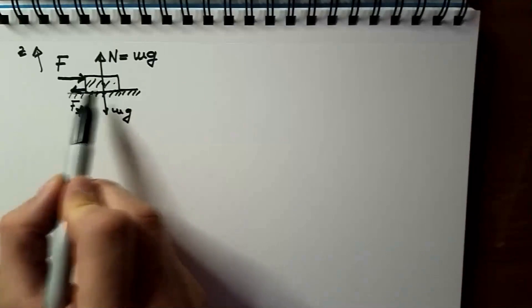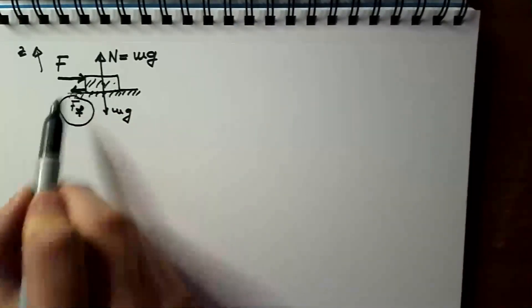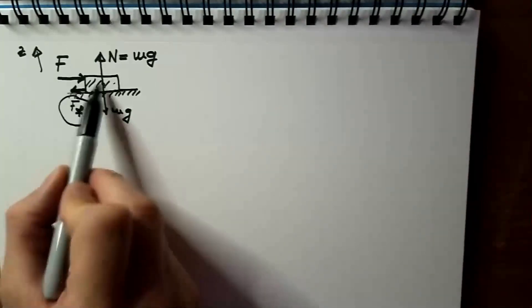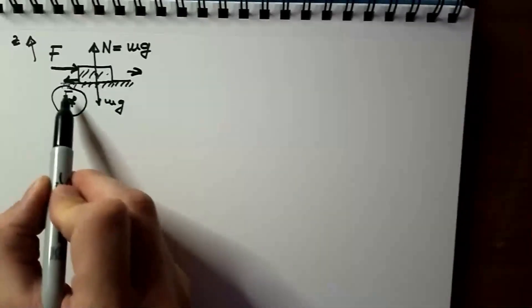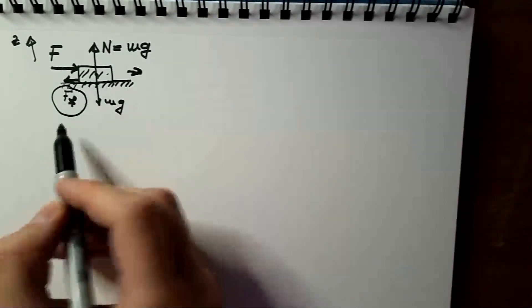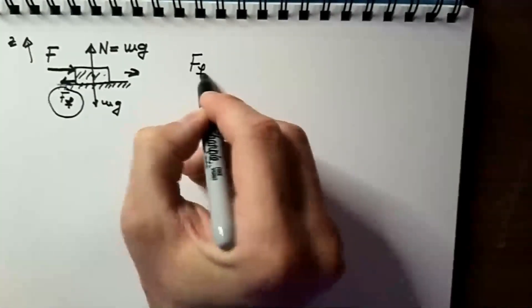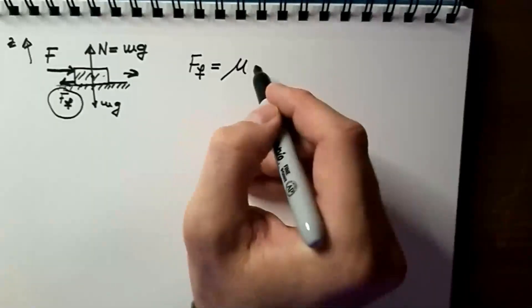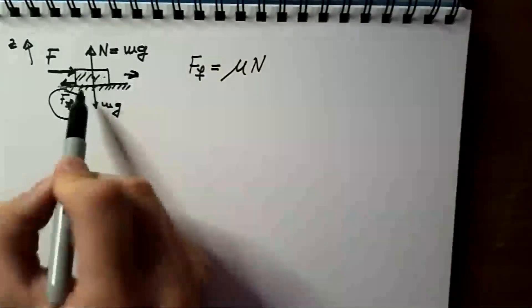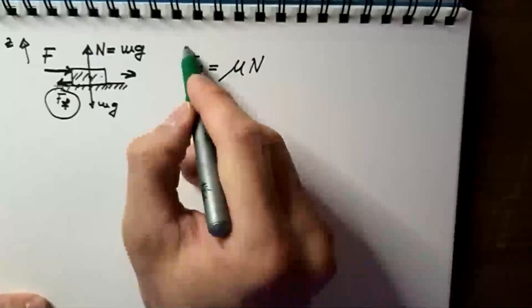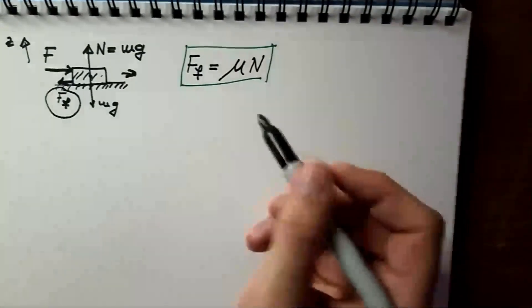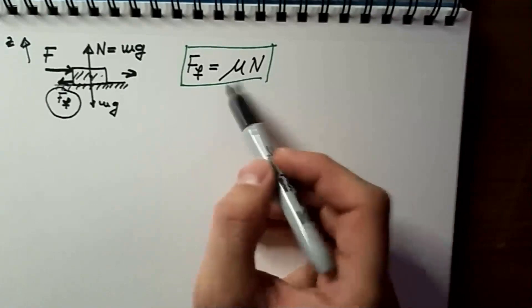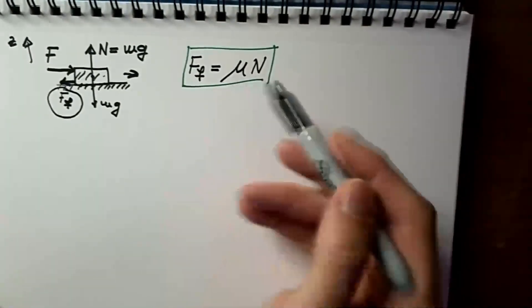If I push a little bit harder, maybe it's still not going to move, which means the frictional force adjusts to my external force. However, at some point I will push too strong and move the object, which means I exceeded the maximum amount of static friction. That maximum amount of static friction is equal to μ times N, where N is the normal force. This is an empirically derived expression for frictional force between two solid objects, and as you can see the expression is quite simple — it involves just one dimensionless coefficient.